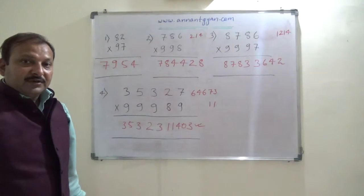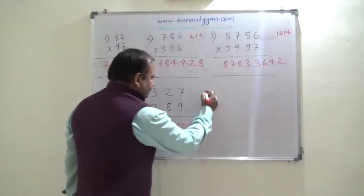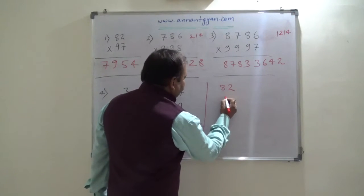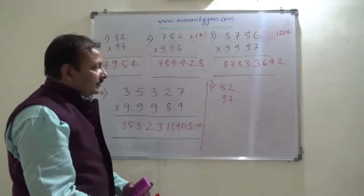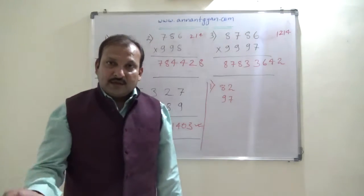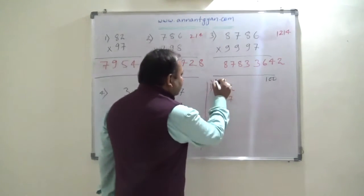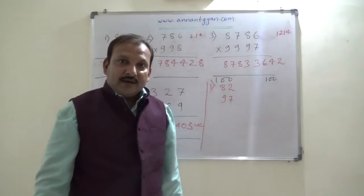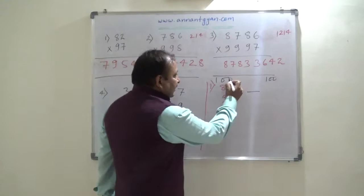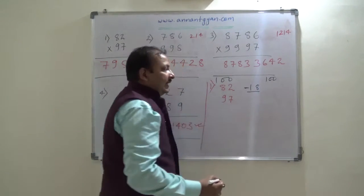The first question is 82 into 97. Both numbers 82 and 97 are nearer to 100, so our base value is 100. There are two zeros in 100, so we shall get two-digit deviation values.